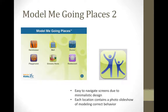Next up we have Model Me Going Places 2. This application is a visual teaching tool to help your child navigate challenging locations in the community, such as the mall, the doctor's office, the grocery store, and more. The app includes full audio narration in English as well as descriptive text of each photo. Each location listed contains a photo slideshow of correct behavior being modeled, and it is also very easy to navigate due to its minimalistic design.